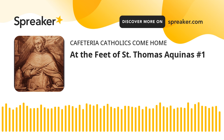In the first part, he looks at God, one and triune, creation, angels and human beings. In the Prima Secundae, he looks at human action in the big picture. Then he goes into detail on specific virtues and vices in the Secunda Secundae. In the last part, he treats Christ and the sacraments — and he died while he was near the end of the treatise on sacraments.